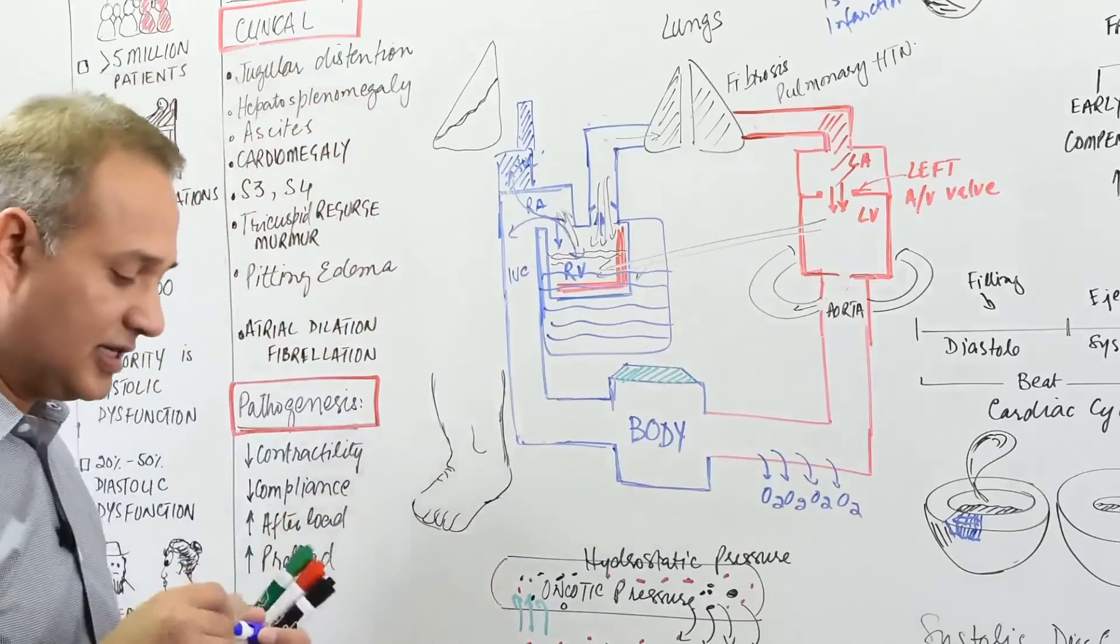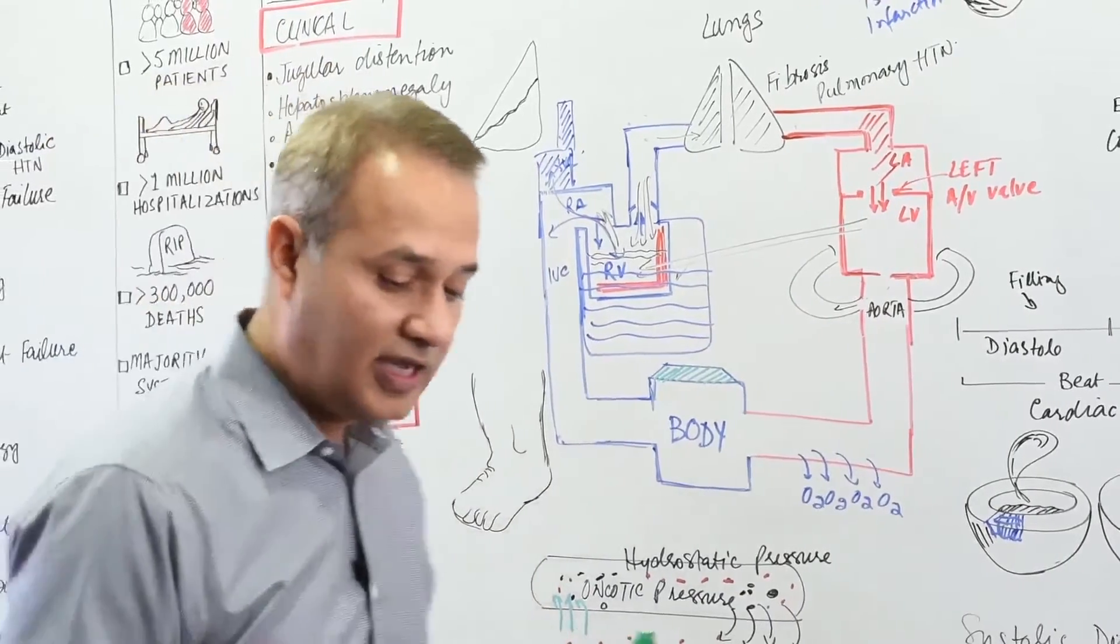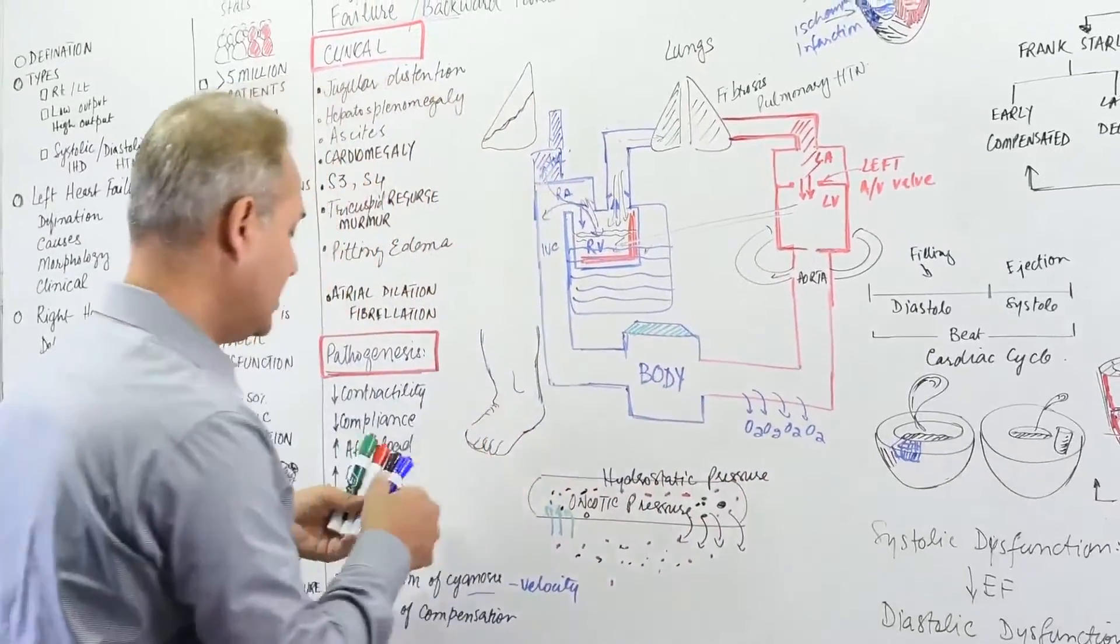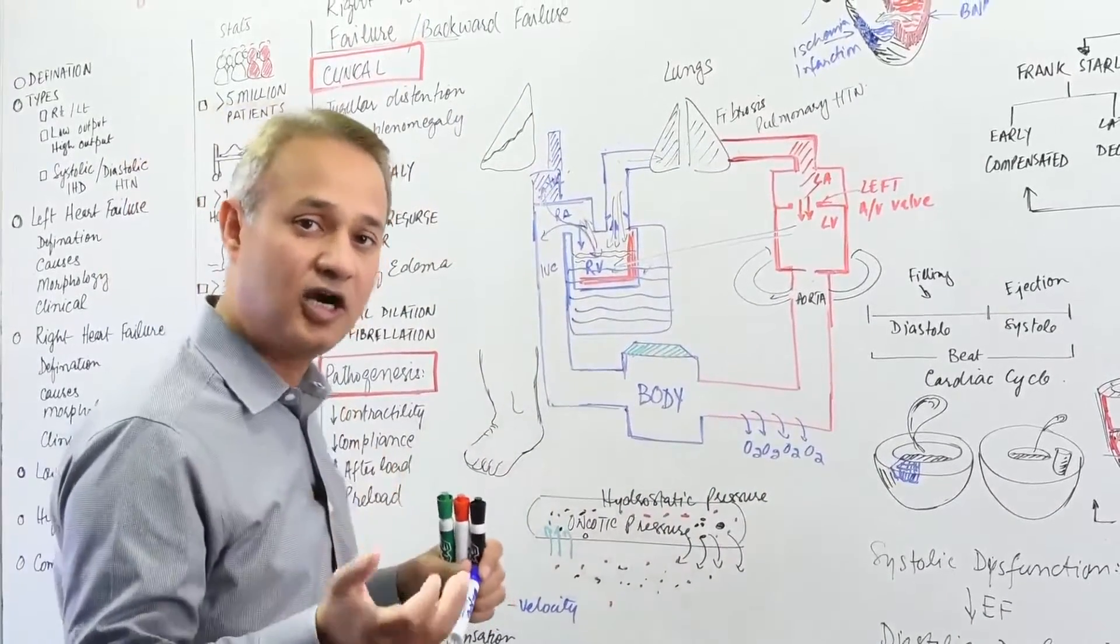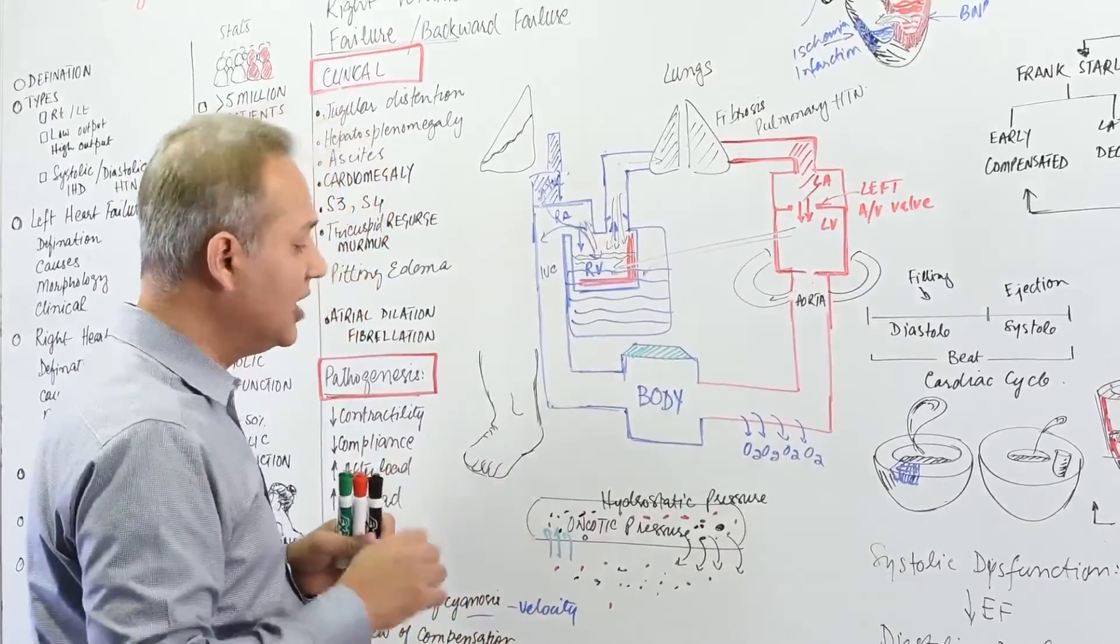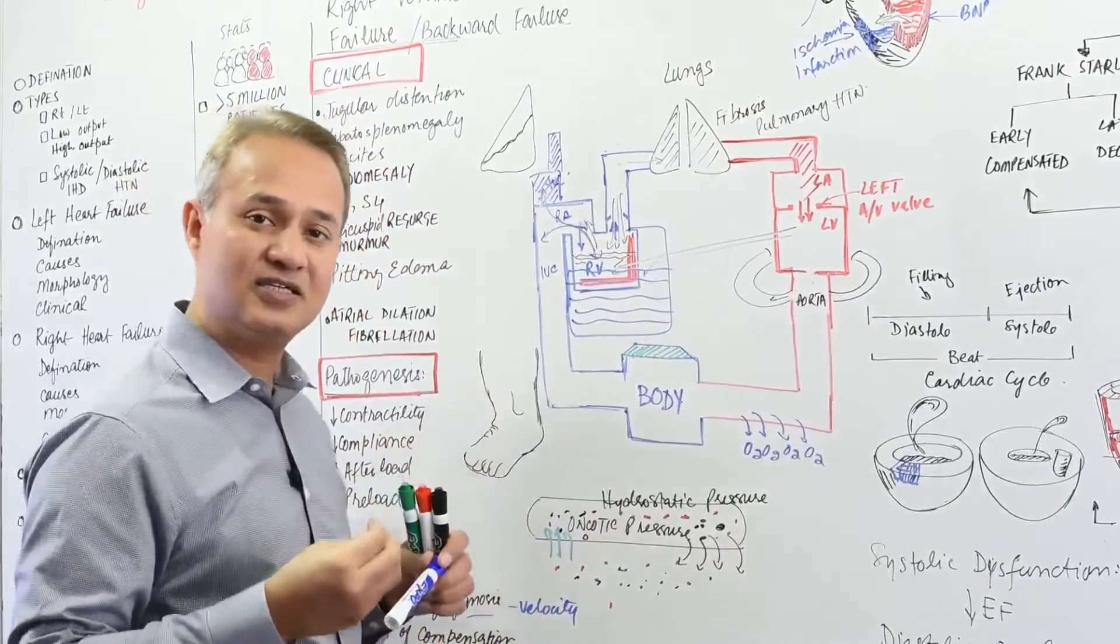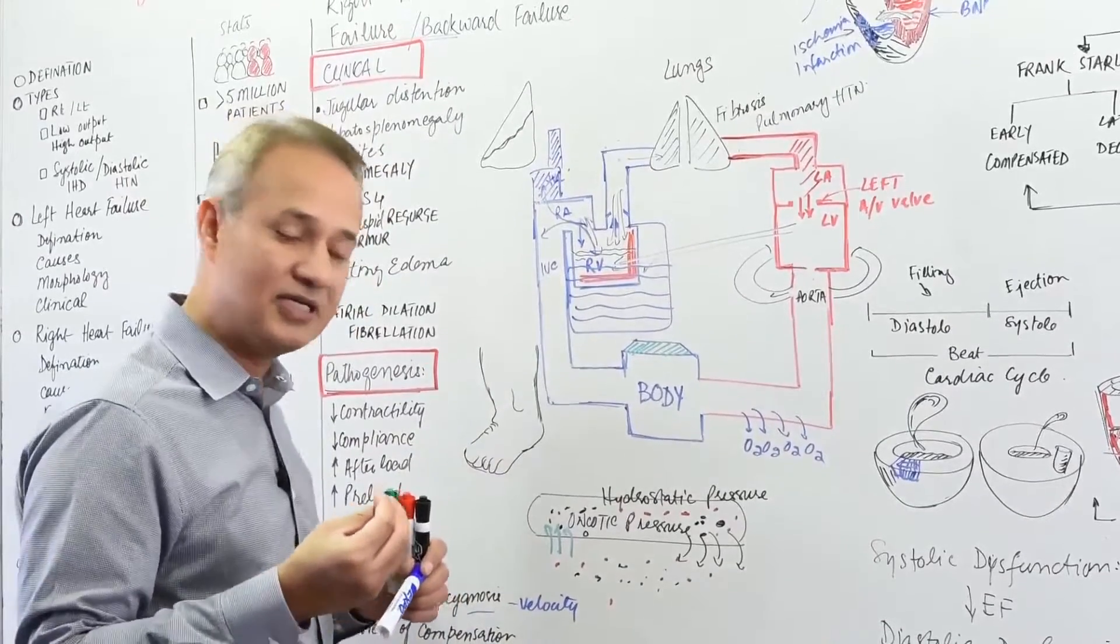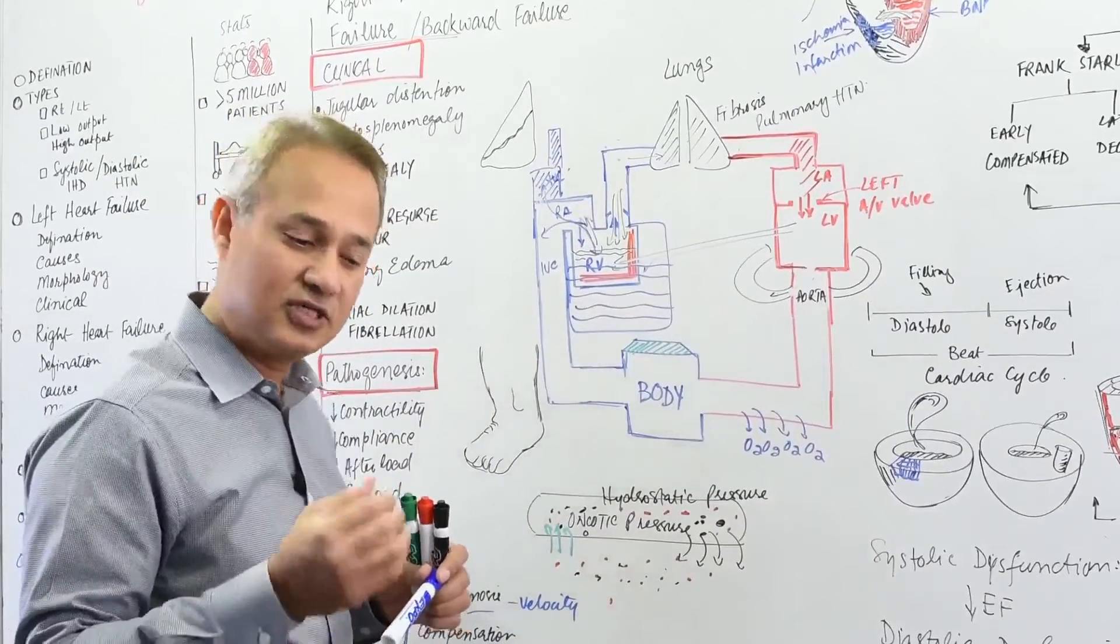Another very quick way to notice right heart failure is pitting edema in the pedal area, in the feet area. Why is the edema pitting and not non-pitting? It is pitting edema because it is serous, a transuddate - it doesn't have proteins in it. It is clear water.